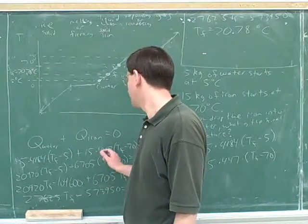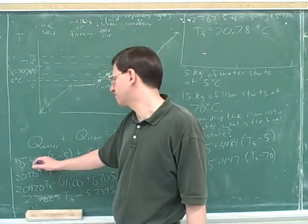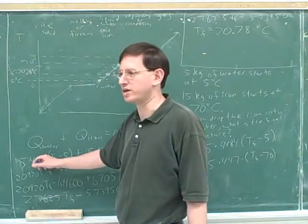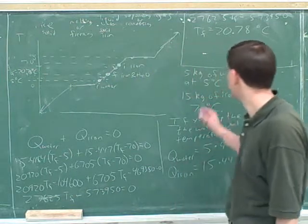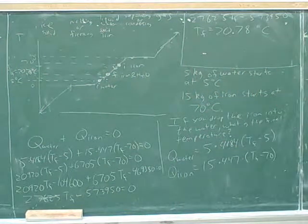It only takes about 450 joules to change the temperature of the iron, but it takes 4,000 joules to change the temperature of the water. So even though we have a lot more iron, its temperature still changed a lot more.